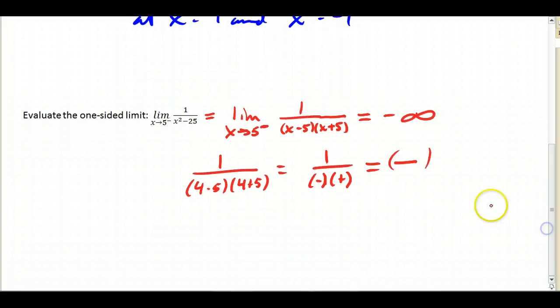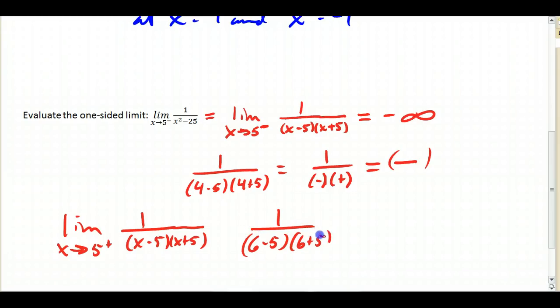If I'd like to know what the limit is as I'm approaching from the right, let's pick a number that's just to the right of 5, like 6. So, I go 1 over 6 minus 5 times 6 plus 5, and here I have two positive factors being multiplied.